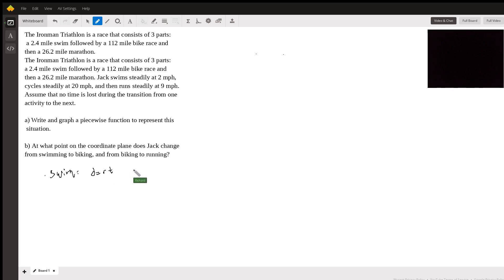D equals RT. That's the formula that we'll use over and over. And we're told that the swimming distance is 2.4 miles. And he swims at 2 miles an hour. So obviously, just divide by 2. So 1.2 is equal to T. So 1.2 hours is spent swimming.